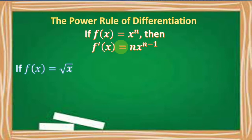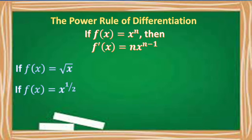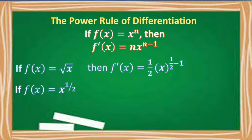If we have f of x is equal to the square root of x, again this must be written first in the form x raised to n. We convert this radical form to exponential form, so we have f of x is equal to x raised to 1 half. The numerator in our exponent comes from the exponent of our radical x, and the denominator, which is 2, comes from the index of our radical. We can now apply the power rule: the derivative is equal to 1 half times x raised to 1 half minus 1.